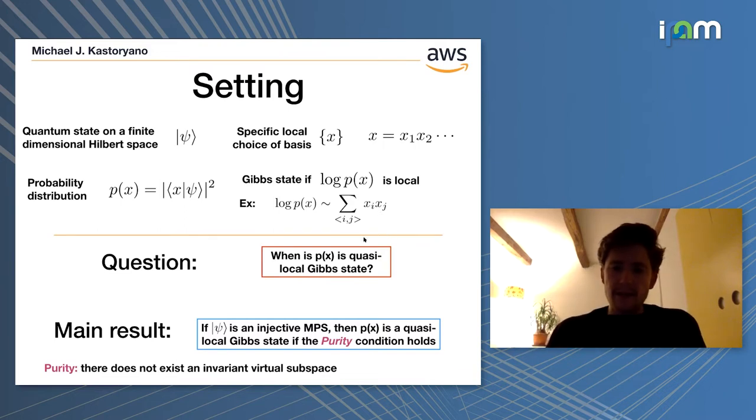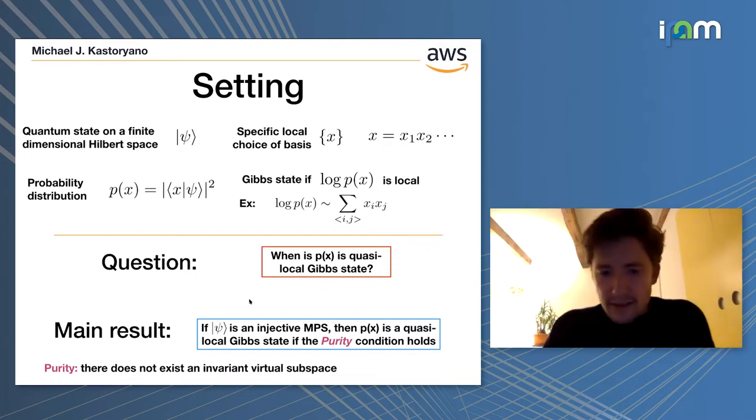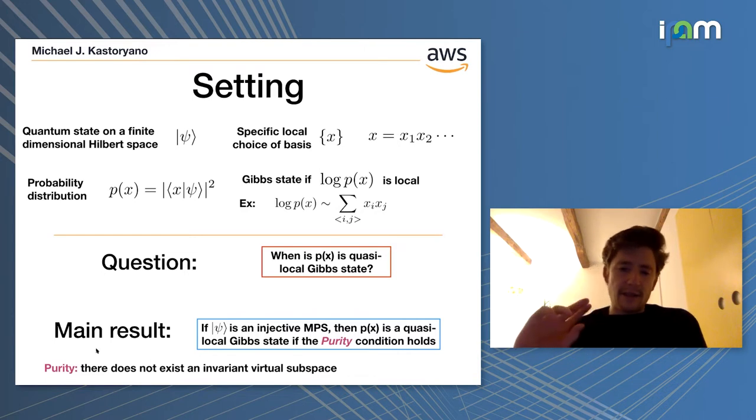Another question I'm asking is, when is Px a quasi-local Gibbs state? The main answer we give is that if Psi is an injective MPS, so a one-dimensional quantum system described as an injective MPS, then Px is quasi-local if a certain condition called the purity holds. We'll go into detail of what this purity condition is. But for now, you can understand it as the fact that there does not exist an invariant virtual subspace for the matrix product state.